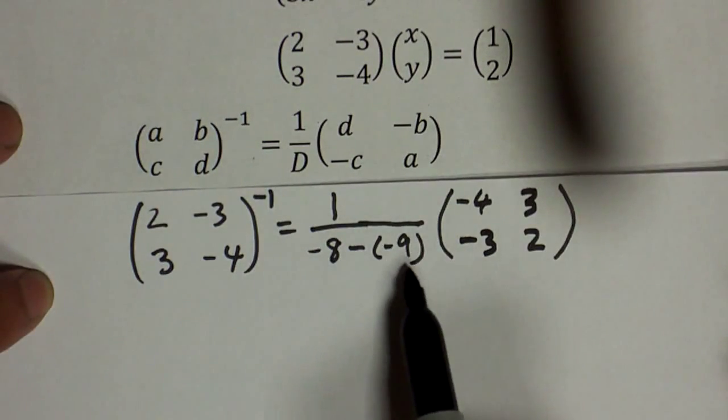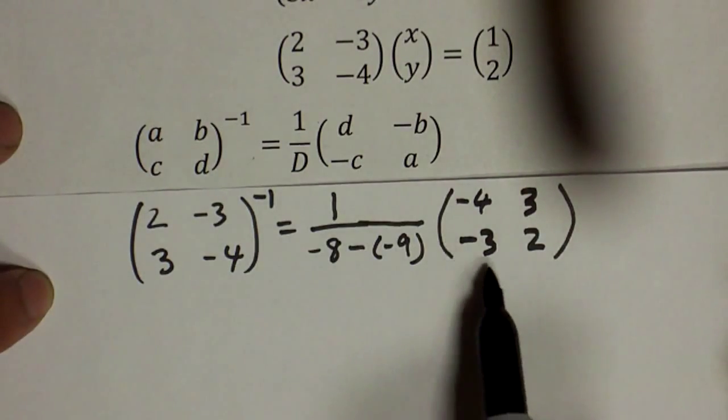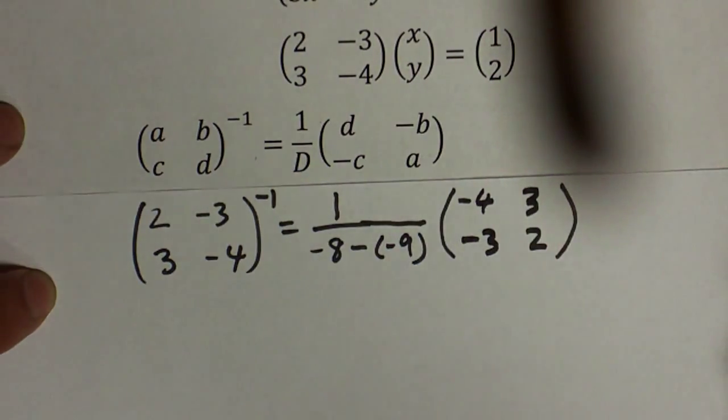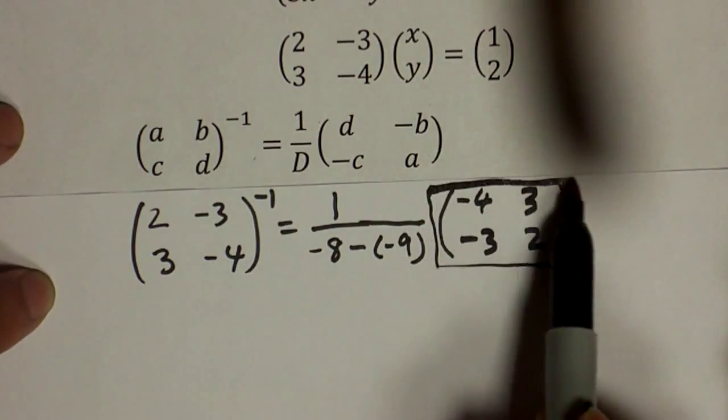And luckily for us, the determinant is just 1, so we just get that as our inverse of the matrix. So that's our inverse. When we get this inverse, what do we do with it?